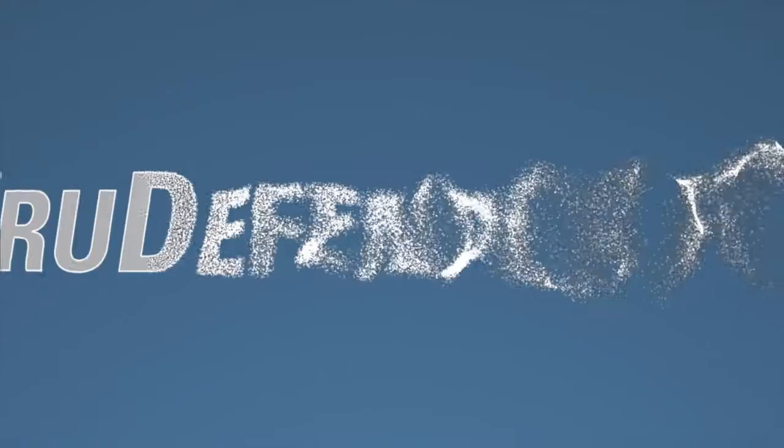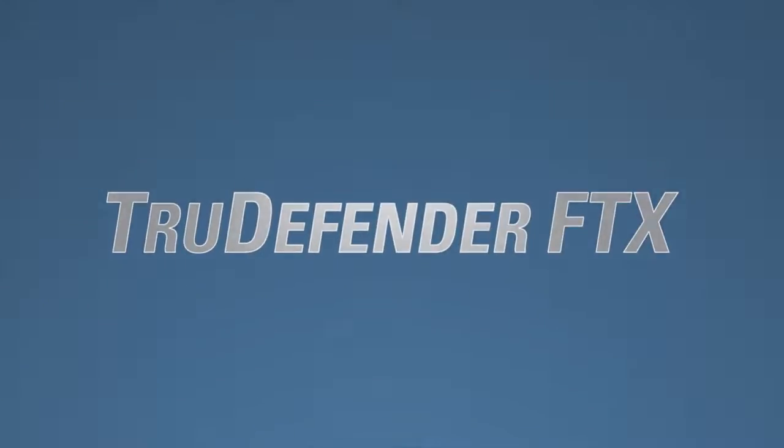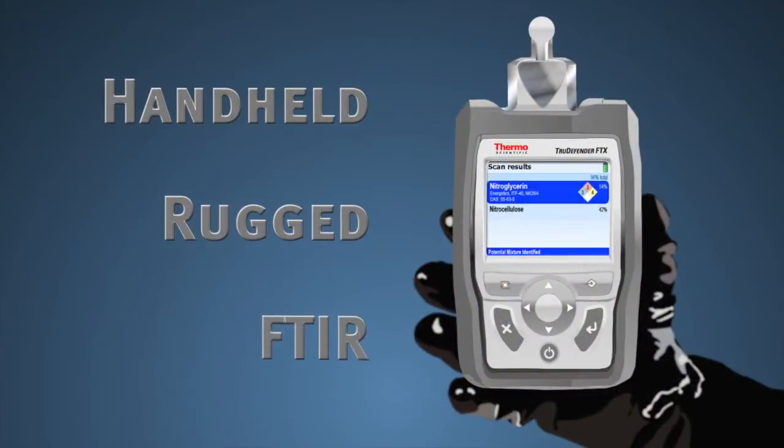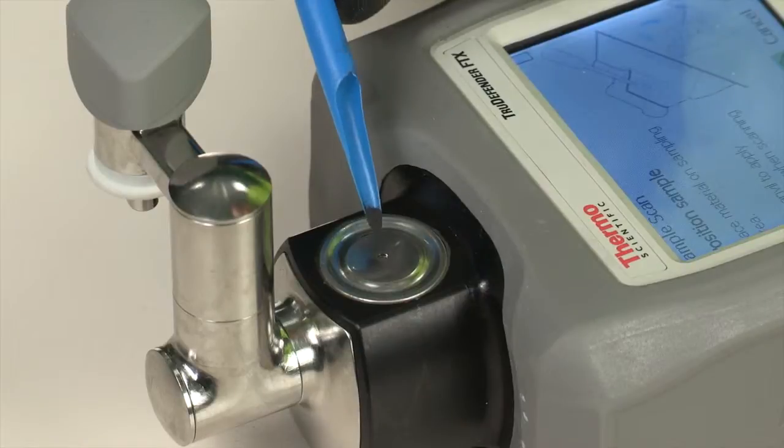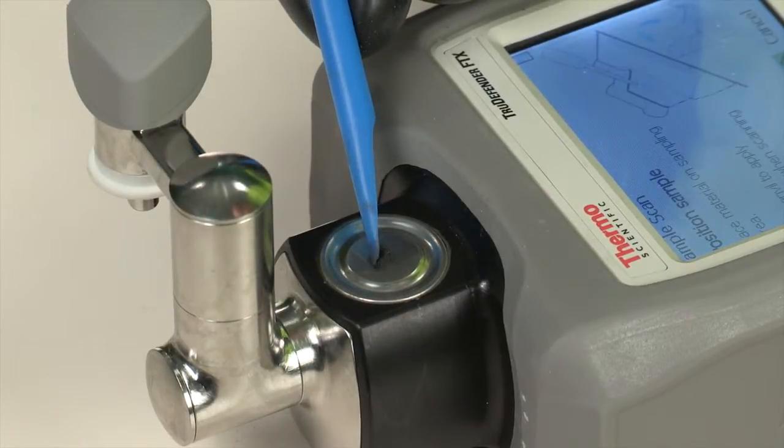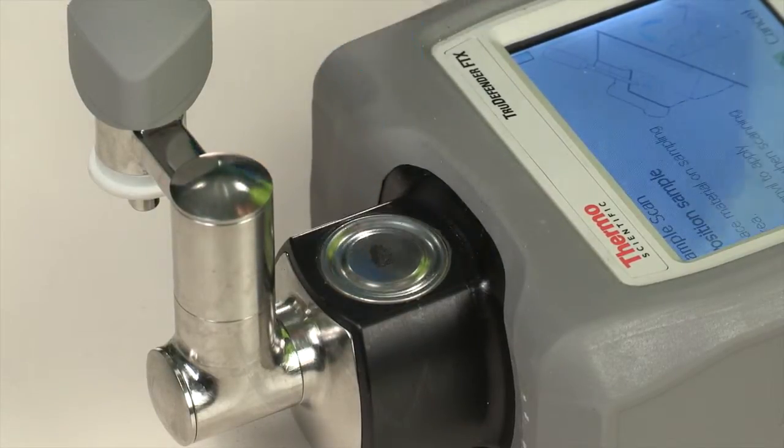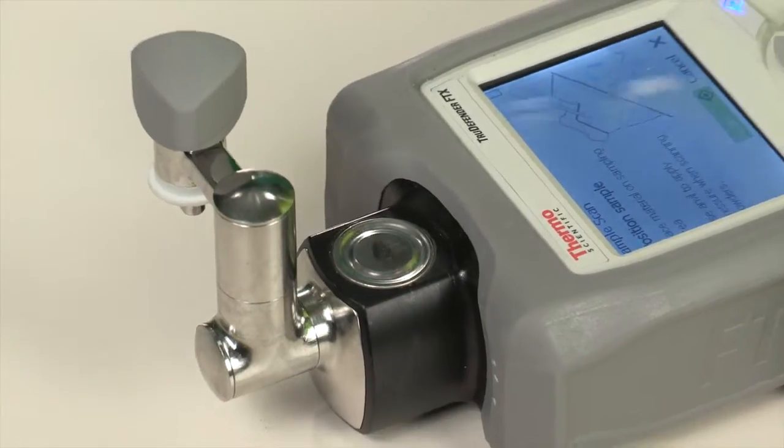the TrueDefender FTX analyzer is the latest in our family of handheld, rugged FTIR tools for chemical ID. The TrueDefender FTX includes a new anvil sampling head engineered from the ground up for better sample control and easier decontamination.